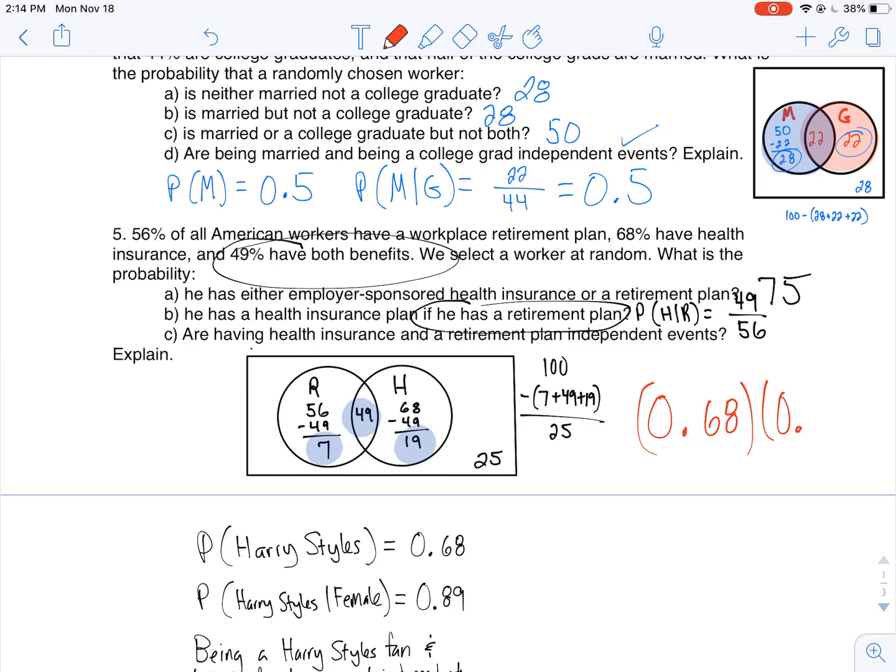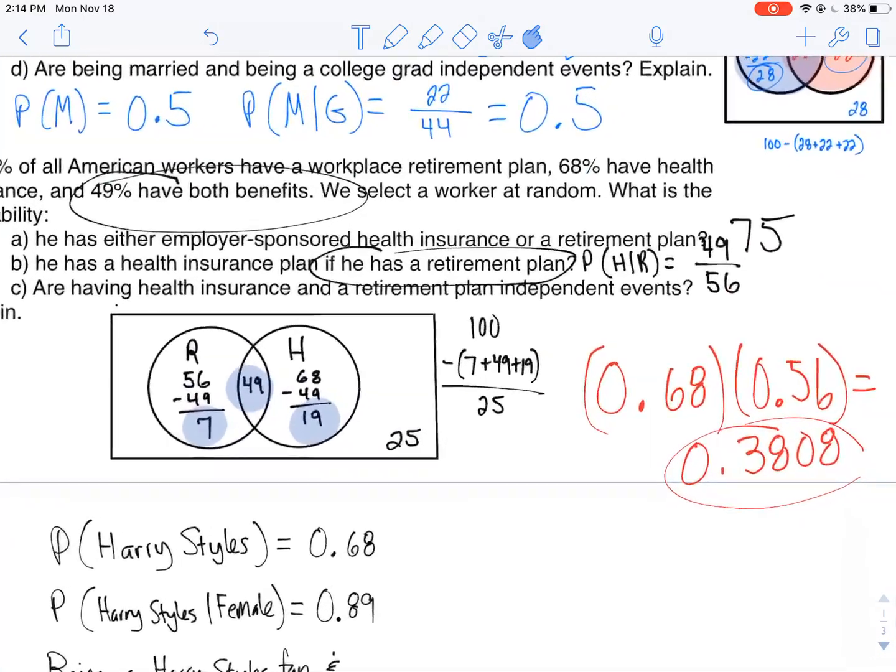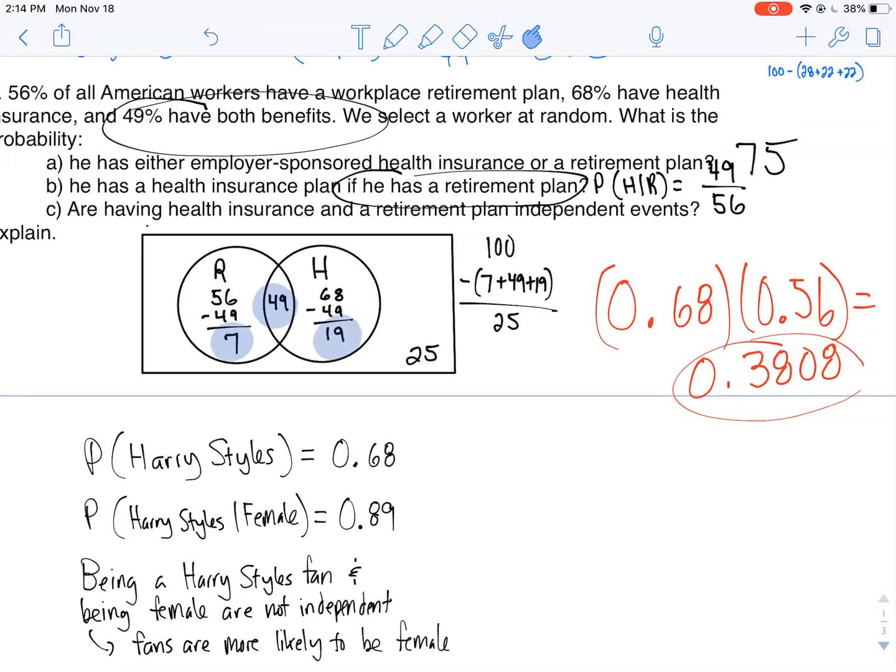So the probability of having retirement is 56. The probability of having health insurance is 68. I multiply these: 0.68 times 0.56, I get about 38%, 0.3808. If these are independent events, I'm gonna be finding this number right at my intersection. Am I though? Nope, I'm getting 49. So immediately I can say they aren't independent.